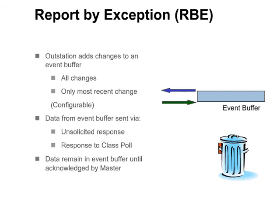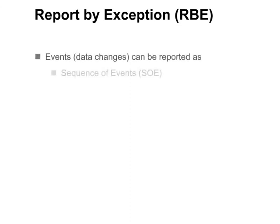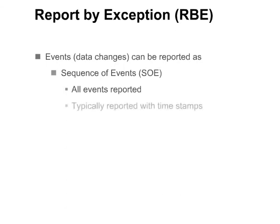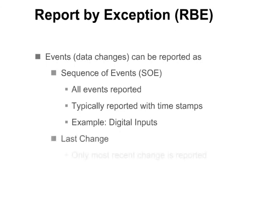Events, or data changes, can be reported either as a sequence of events or as only the last change. With sequence of events, all events are reported and they are typically reported with timestamps. Digital inputs are typically reported in this method. With last change, only the most recent change is reported and is typically reported with a variation without a timestamp. Analog inputs typically use the last change method.